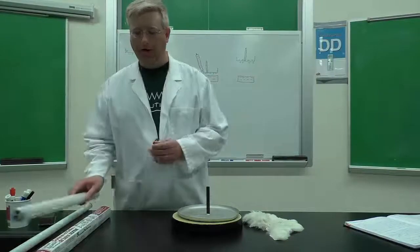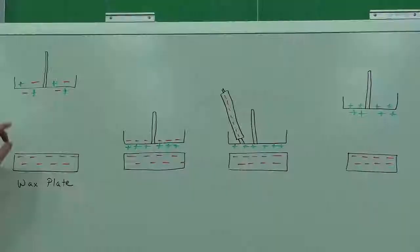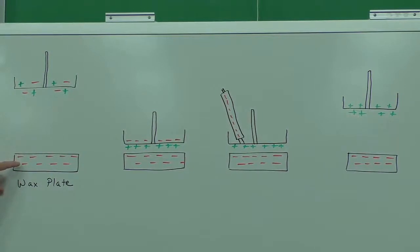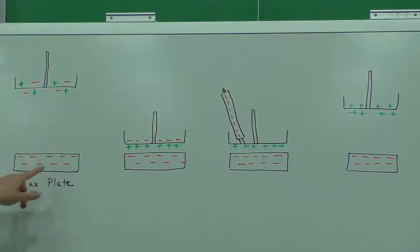The way the electrophorus works is that initially the aluminum plate is neutrally charged, so it's got an even amount of positive and negative charge. After I rub the wax plate with fur, it's going to collect a negative charge.